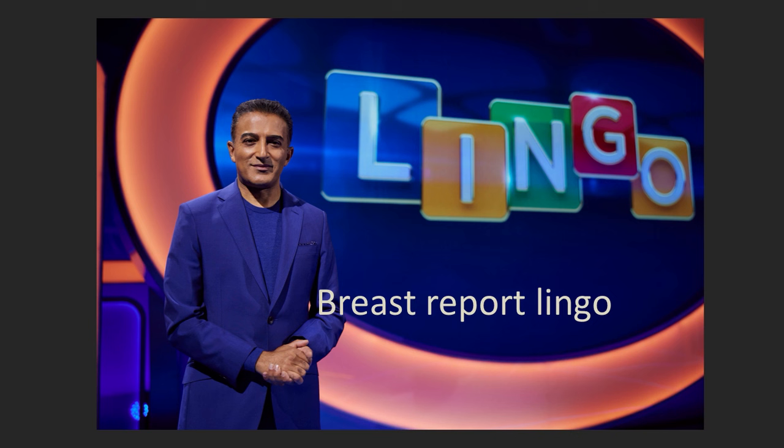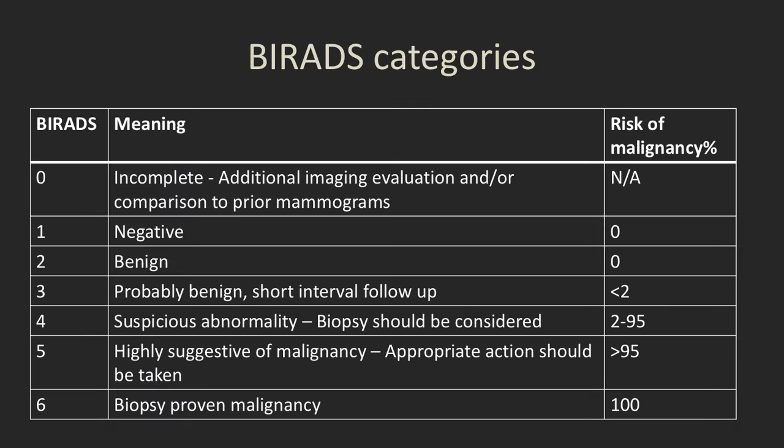I want to briefly go over important terminology used in our breast reports. The most important is the BI-RADS category. We follow the American College of Radiology's BI-RADS and categorize every mammogram between BI-RADS 0 and BI-RADS 6. BI-RADS 0 means incomplete — on a screening mammogram we need additional images and we don't know the risk of malignancy at that point.